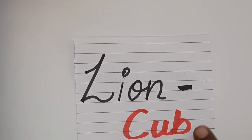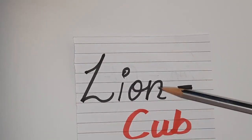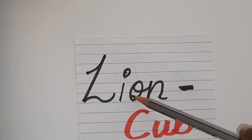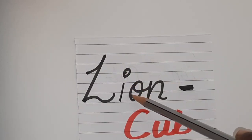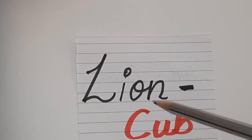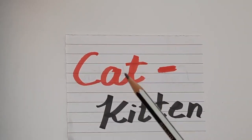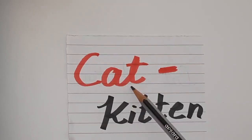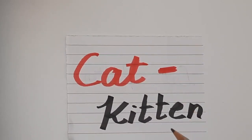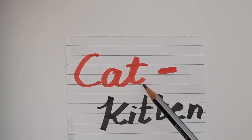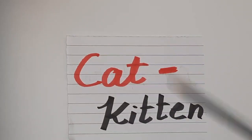So here you see, children — lion. Lion's young one is cub. And cat — young one of the cat is kitten.